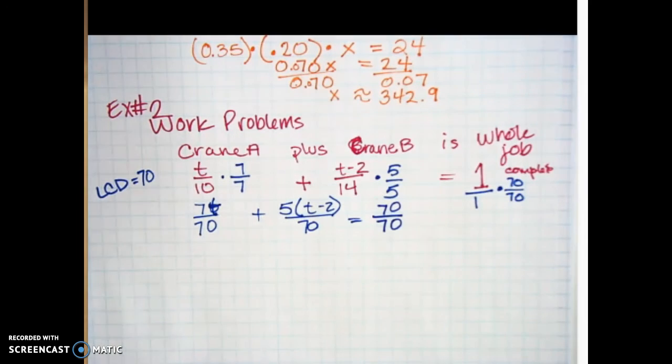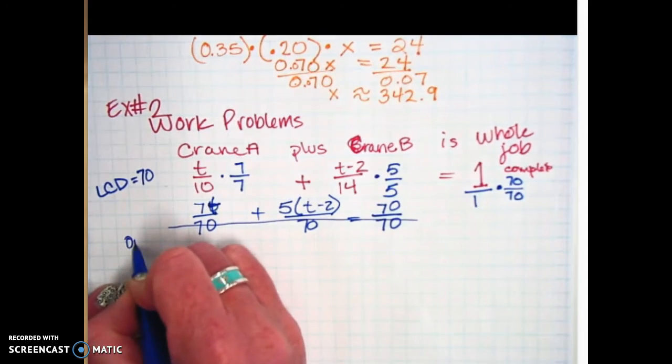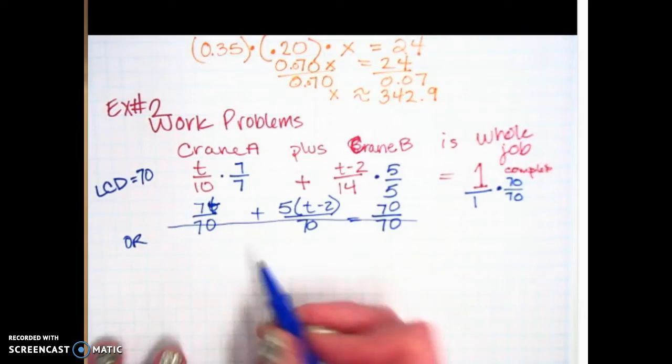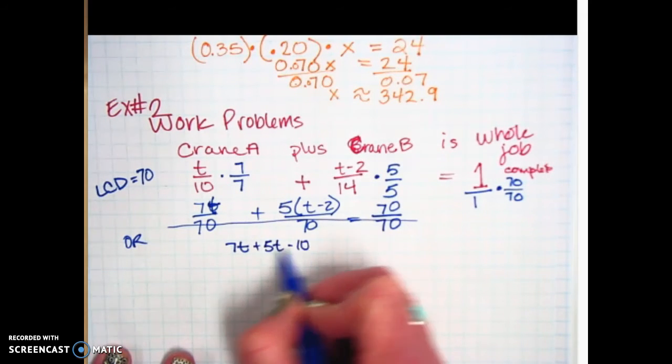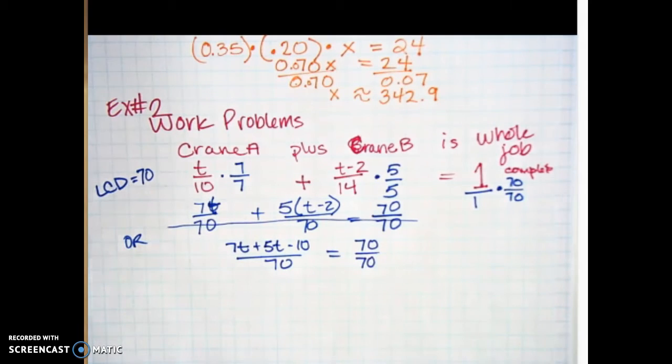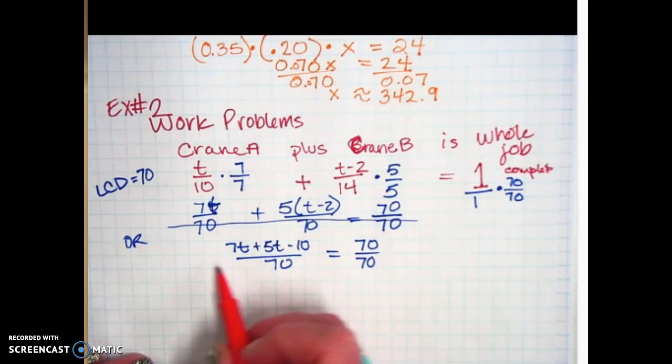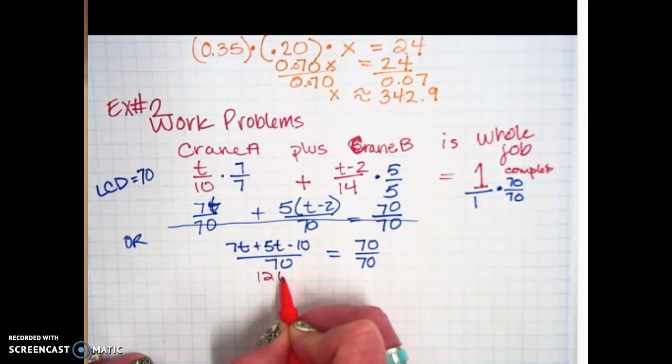So that means everything's going to have a denominator of 70. So we'll rewrite this as T times 7, which is 7T, plus 5 times T minus 2. I'll distribute that in just a second. And then 1 times 70, which is just 70 over 70. In this case, once all of your denominators are the same, they're going to end up canceling off. So you can either cancel them off at this point, or you could combine these two terms.